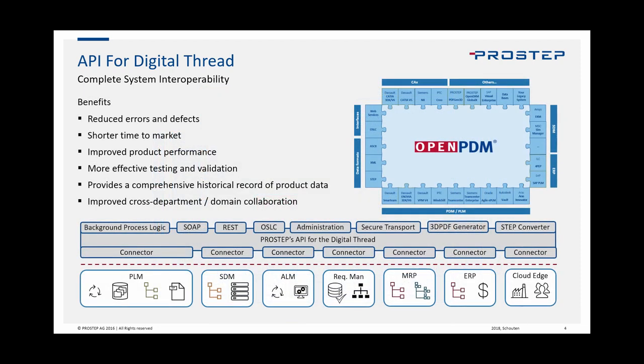Ultimately, enabling the digital thread yields improved communication throughout the product lifecycle. Product data automatically synchronized and available to all parties results in substantial benefits such as reduced errors and defects, shorter time to market, improved product performance, more effective testing and validation, a comprehensive historical record of product data, and improved cross-department and domain collaboration.